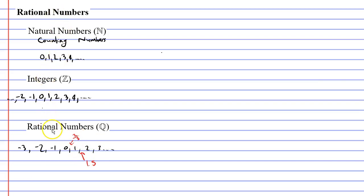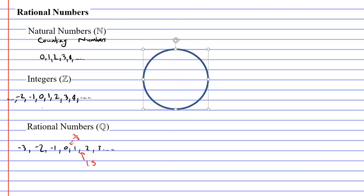Now whenever you see these three sets of numbers, you'll quite often see them in a diagram which has circles or ovals on it. So I'm going to show you this diagram now. We'll start with a circle, and inside of the circle I'm going to put the symbol N, which stands for my natural numbers. I might put some examples of the natural numbers down, such as 1, 2, even 10, or 0. So we can see inside the circle we have just our positive numbers and our 0.